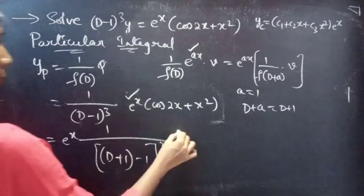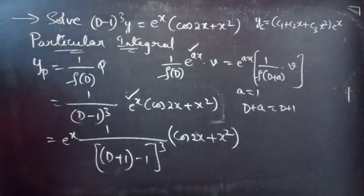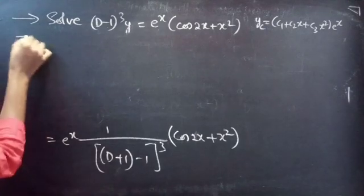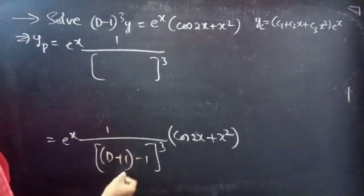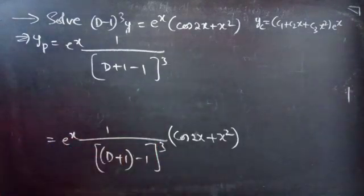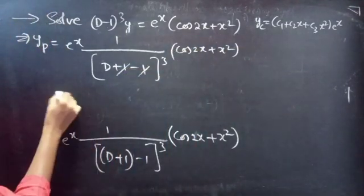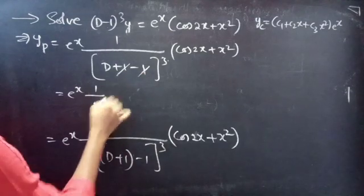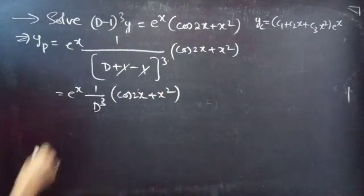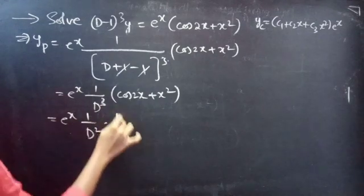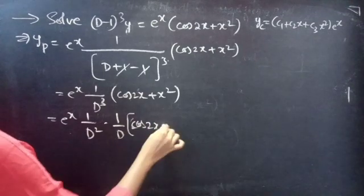Replacing D with D plus 1, yp becomes e power x into 1 by (D plus 1 minus 1) whole cube into cos 2x plus x square. Here plus 1 minus 1 cancels, giving us e power x into 1 by D cube into cos 2x plus x square. We can write 1 by D cube as 1 by D square into 1 by D into cos 2x plus x square.